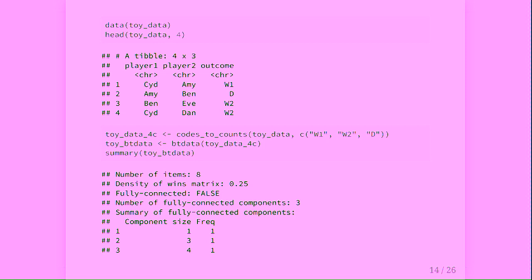In contrast, the toy dataset — the imaginatively named toy dataset — is what I showed the graph of earlier. In this case we don't have counts but a code indicating who won, so a code_to_count helper function handles that. The summary of the btData object shows it's not fully connected: there are three components — one of size three, one of size four, and a single item component. This helps determine what estimates you want: if you find the MLE by component the single item disappears, so if you want a ranking of all eight players you need the MAP estimate.